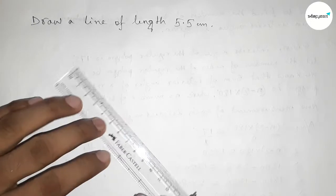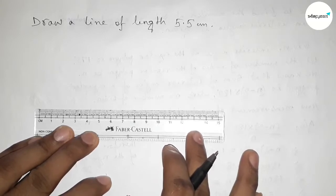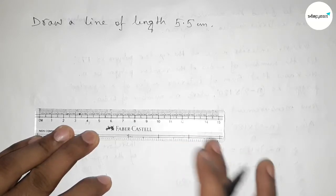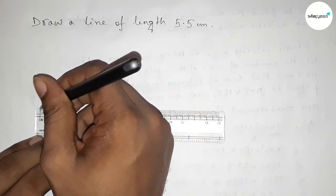So first putting the scale here by this way and next measuring 5.5 centimeter. So this is starting zero.